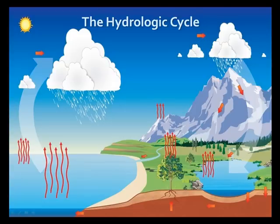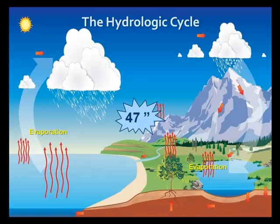The hydrologic cycle describes a process through which water moves through the Earth's atmosphere and water system, basically how water is recycled. Let's start with how water gets into the atmosphere. Evaporation. Evaporation is the changing of water into water vapor, a gas. On average, 47 inches of water is evaporated from the ocean's surface into the atmosphere each year.